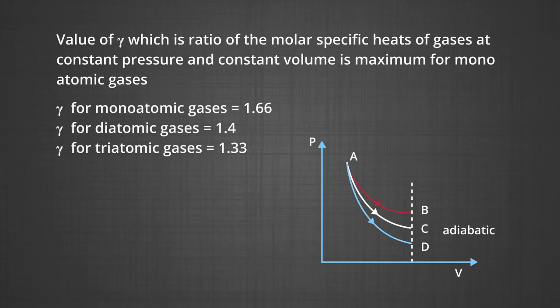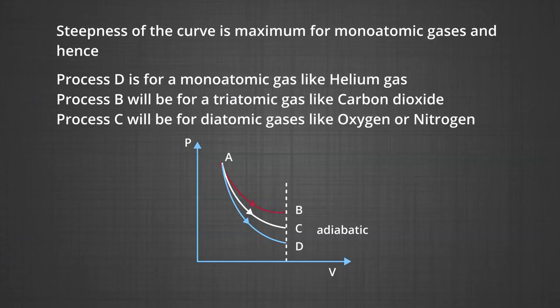The steepness of the curve depends on the value of gamma, which is the ratio of molar specific heats at constant pressure and constant volume. Gamma for monoatomic gases is 1.66, gamma for diatomic gases is 1.4, and gamma for triatomic gases is 1.33. So the steepest curve is for a monoatomic gas: process D is helium, process B is a triatomic gas like carbon dioxide, and process C is a diatomic gas like oxygen or nitrogen.